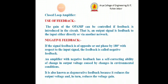Since the amplifier is closed loop, that means obviously from the output towards the input we are having a connection in the form of a feedback. The gain of the amplifier can be controlled if the feedback is introduced in the circuit — that is, an output signal is fed back to the input directly or via some network.